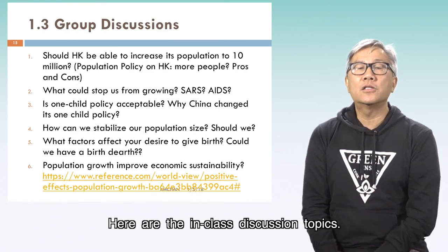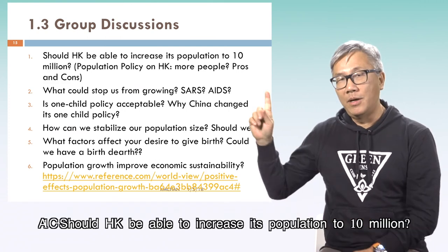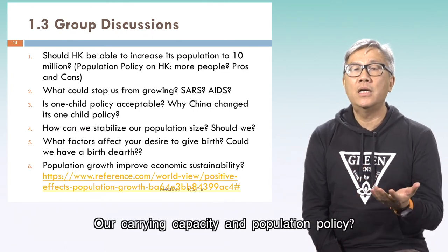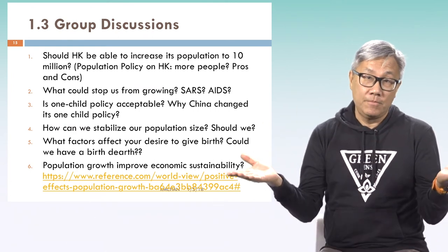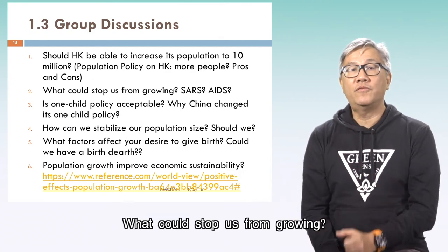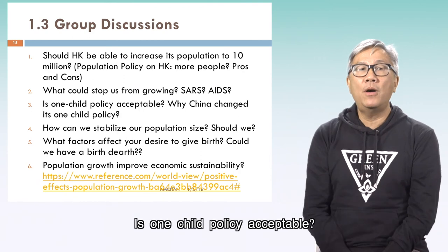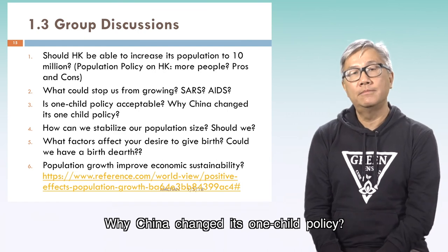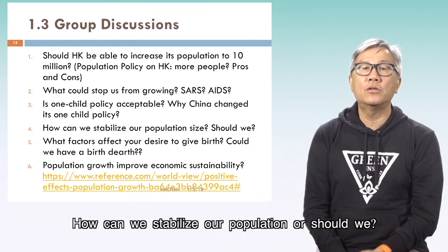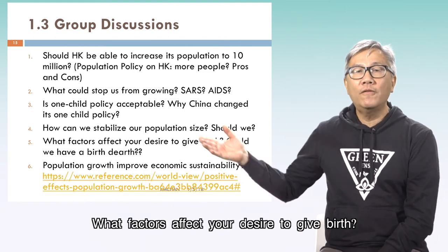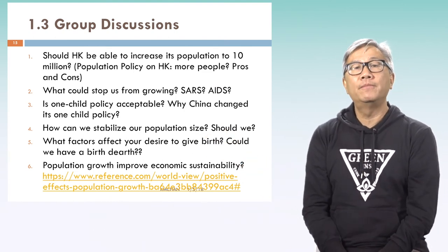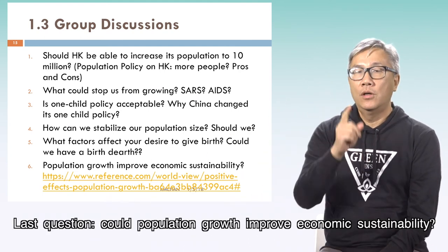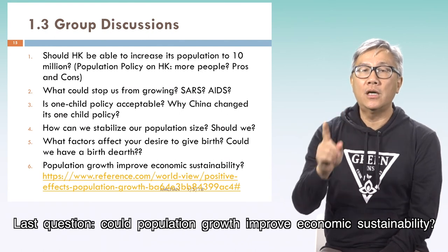Here are the in-class discussion topics: Should Hong Kong be able to increase its population to 10 million? What is our carrying capacity and population policy? What could stop us from growing? Is a one-child policy acceptable? Why did China change its one-child policy? How can we stabilize our population, or should we? What factors affect your desire to give birth? Could we have a birth draft? And lastly, could population growth improve economic sustainability?